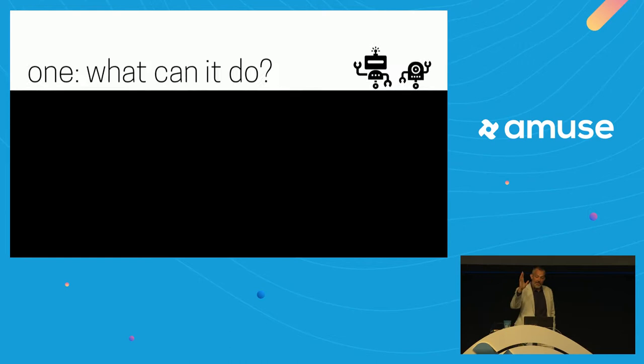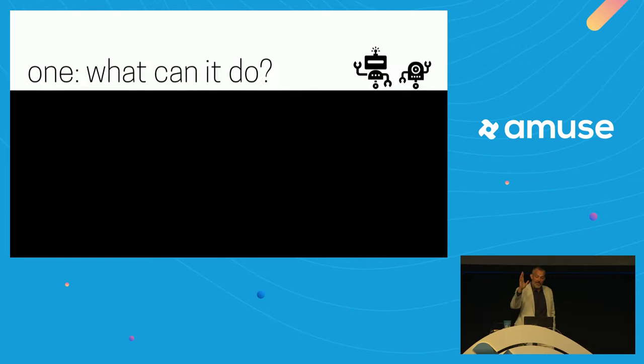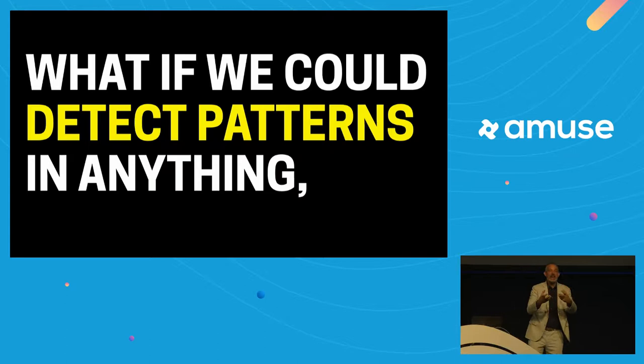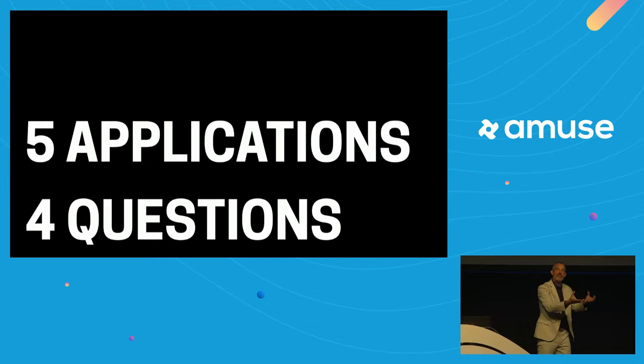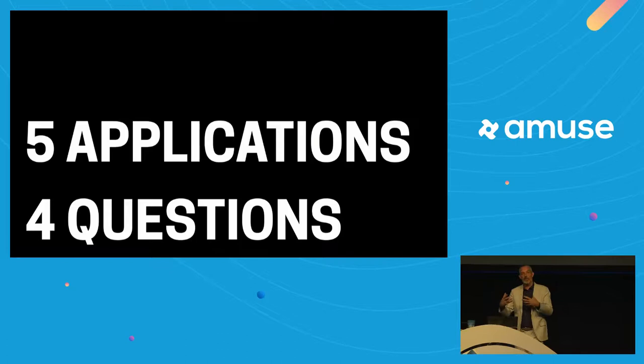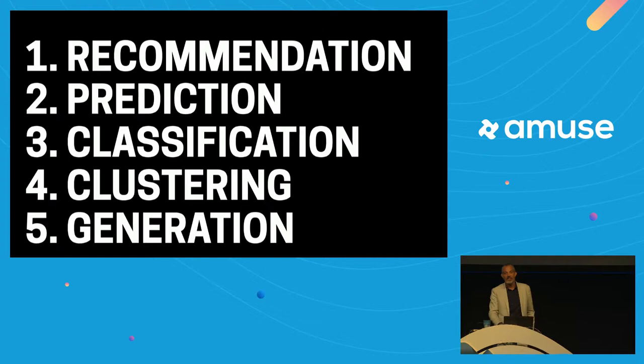The first question: what can machine learning do for us, or another way to put it — why team up with machine learning? The big opportunity is: if we could detect patterns in anything, how might we act on them? I want to talk about five applications, five forms that machine learning might take in your everyday products, and four types of questions that machine learning can answer.